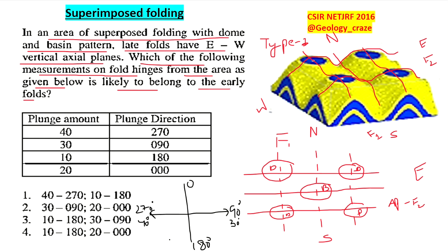And 10 degrees toward 180, and towards 0 degrees or 360 it is 20 degrees. So we have to tell which data is the earlier fold. Obviously the data that is in the direction of north-south is the earlier data.